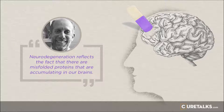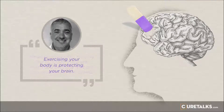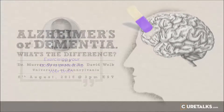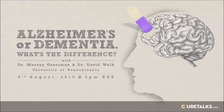Dementia refers to the progressive cognitive change that occurs as these misfolded proteins accumulate in the brain. There's a common misconception that dementia refers only to memory. In fact, memory is the first symptom evident in many folks with Alzheimer's disease, which is the most common form of dementia. But there are other forms of dementia that can affect primarily language, and we refer to these as progressive aphasia. Aphasia is a disorder of language; progressive means that the language is worsening, due to misfolded proteins accumulating in language parts of the brain.